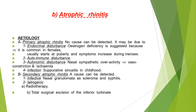Atrophic rhinitis: the etiology of primary atrophic rhinitis — no cause can be detected. It may be due to endocrinal disturbance such as estrogen deficiency, which is suggested because it's common in females and usually starts at puberty with symptoms increasing during menses. Other theories include autoimmune disturbance, autonomic disturbance with nasal sympathetic overactivity causing vasoconstriction and ischemia, or infection and sinusitis in childhood.